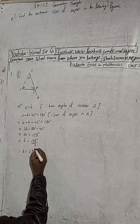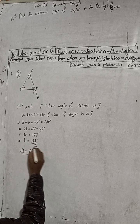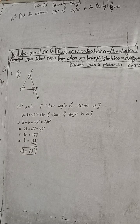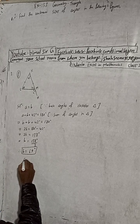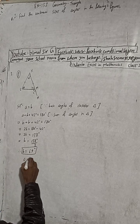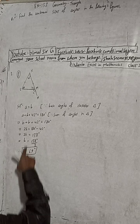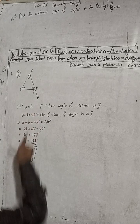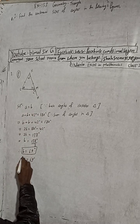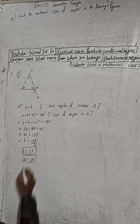B is equal to 69 degrees. And now A is equal to 69 degrees as well, because A is equal to B, so A is also 69 degrees.